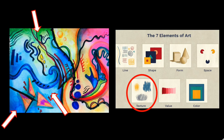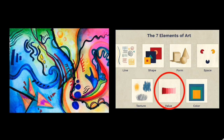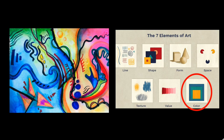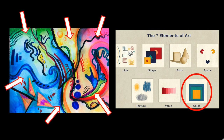I used texture in my artwork through water spots, salt, and by layering color pencils and crayons to make a scratchier texture, as well as a smooth texture using my oil pastels. I used value — the lightness and darkness of a color — in multiple spots where I used different tints and shades like darker and lighter blues. Finally, I definitely used lots of color in my picture, including different color families such as warm colors and cool colors.